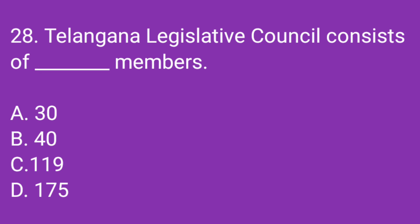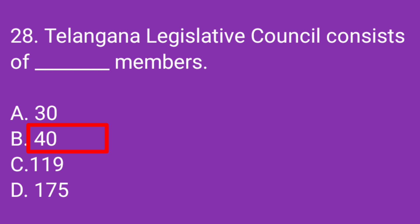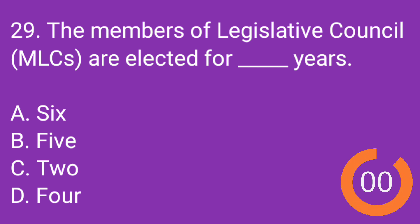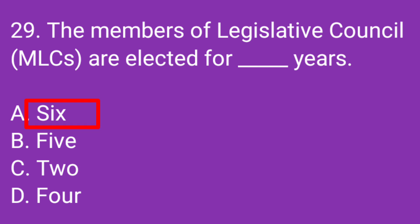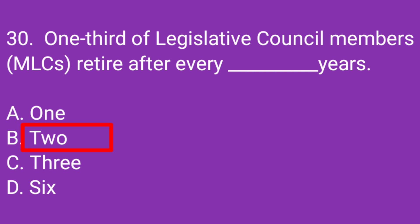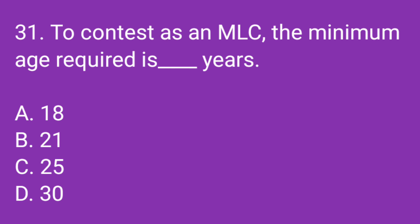Question number 28: Telangana Legislative Council consists of dash members. Correct answer: 40. Question number 29: The members of the Legislative Council, MLCs, are elected for dash years. Correct answer: 6 years. Question number 30: One-third of Legislative Council members, MLCs, retire after every dash years. Correct answer: 2 years.